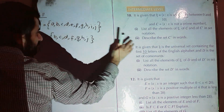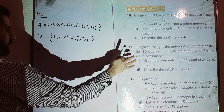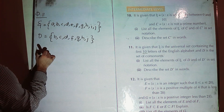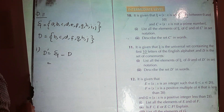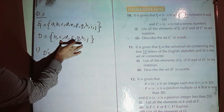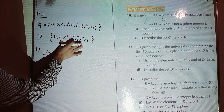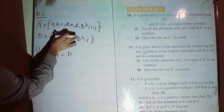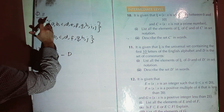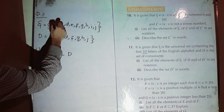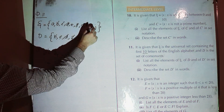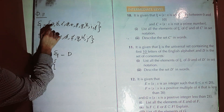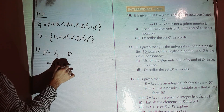Part one: list all the elements of the universal set — I have done that. List elements of D — I have done that. Now for D complement, that is the universal set minus D. We exclude all elements of D — B, C, D, F, G, H, J — from the universal set. What is left is A, E, and I.